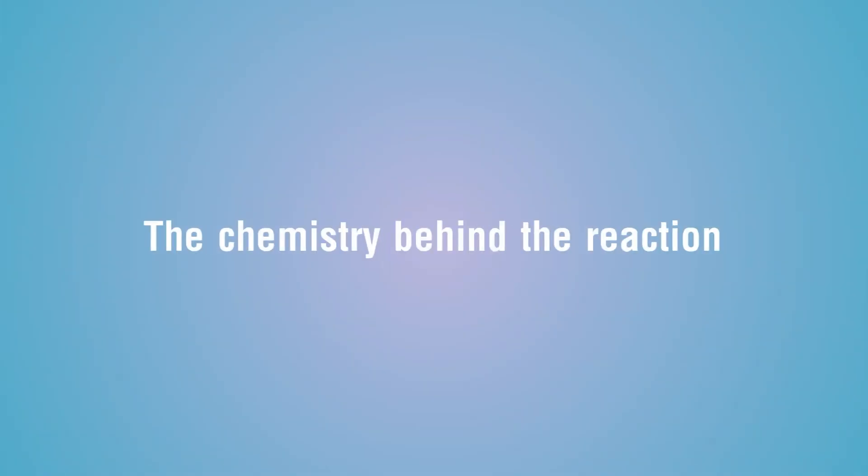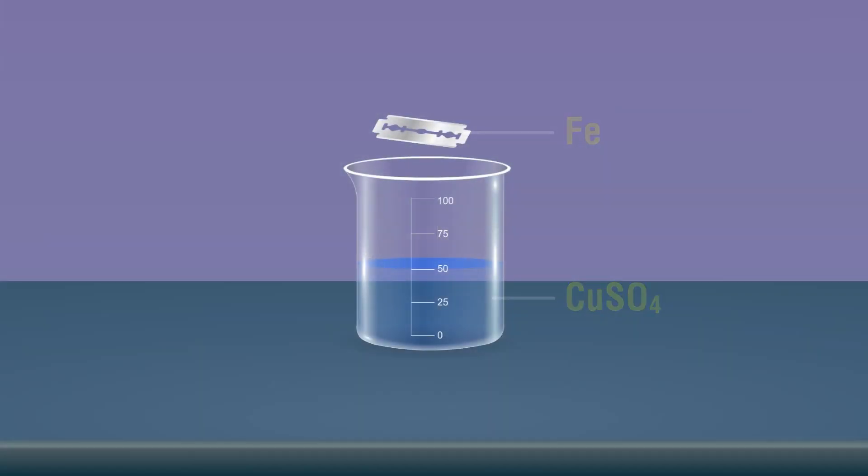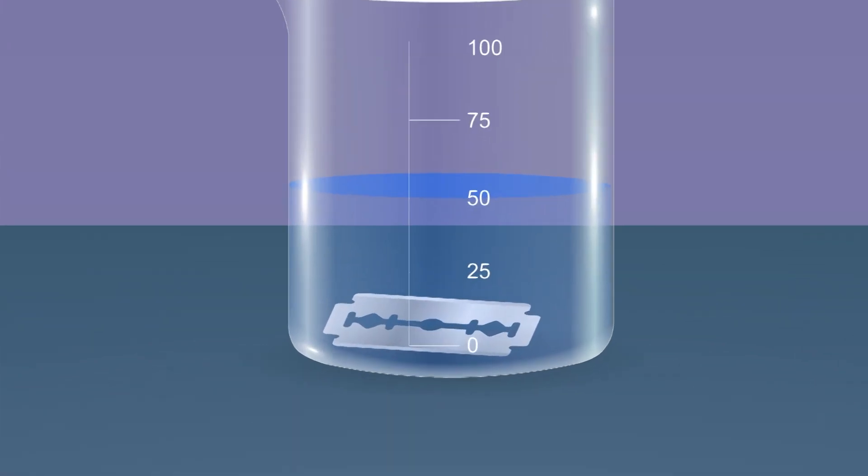The chemistry behind the reaction: The brown copper metal is deposited on the shaving blade due to its displacement from copper sulfate by iron. The green color of the solution is due to the formation of iron sulfate.